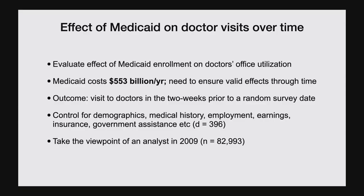Let me demonstrate this on a real example: the effect of enrolling in Medicaid on doctor's visits. Medicaid is a government insurance subsidy program for low-income adults. One major outcome people are interested in is whether it actually allows people access to good healthcare — and it's a major piece of policy costing around $550 billion every year. As one outcome, we're looking at whether people went to the doctor's office in the last two weeks, where the survey date was randomly chosen so respondents couldn't manipulate their visit days. We control for a rich set of covariates. We're taking the viewpoint of an analyst in 2009, contemplating the details of the Medicaid expansion at the national scale.